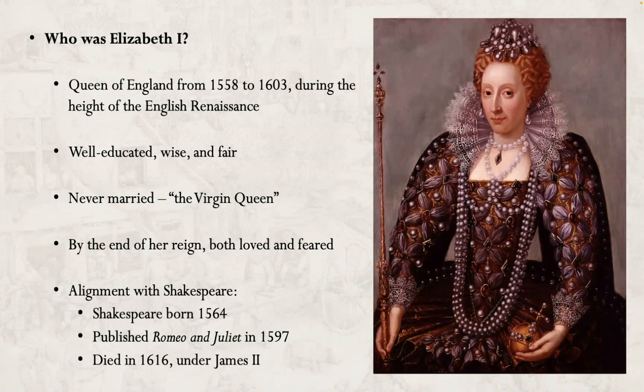That king was James II of England, James VI of Scotland. You'll hear references to the King's Men — a group of theater producers that Shakespeare worked with and was largely in charge of — which was a group playing for James II, a little bit after the rule of Elizabeth I.